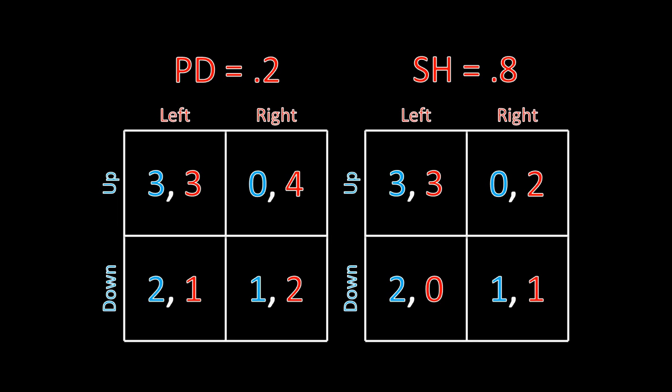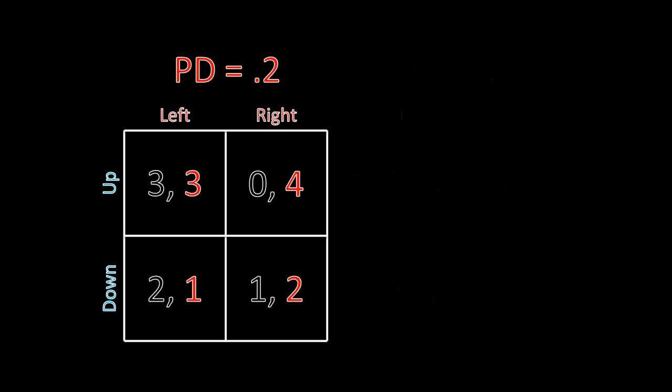Before we solve this game using Nash equilibrium, I want to highlight an important fact about player two's strategy if she's the prisoner's dilemma type. If she's the prisoner's dilemma type, she has prisoner's dilemma preferences, and so we know she's going to take the defect strategy, which in this case would be right. Right strictly dominates left — four is greater than three, and two is greater than one. I want you to save that piece of information in the back of your brain for the moment, and let's go back to the original matrices.